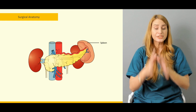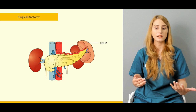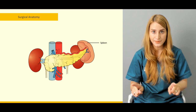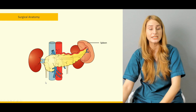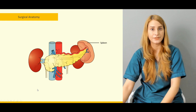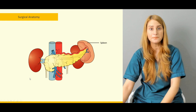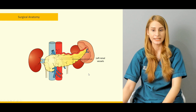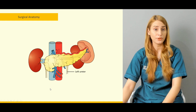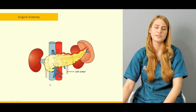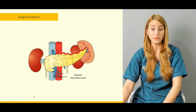To summarize the relationships: the uncinate process is related to the superior mesenteric vessels in front; behind the head of the pancreas is the inferior vena cava; behind the neck is where the portal vein is formed; and the aorta lies behind the body of the pancreas. You can also see the splenic artery, splenic vein, and renal vessels in the diagram.